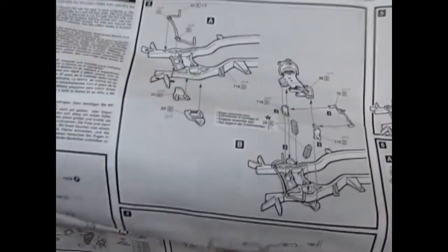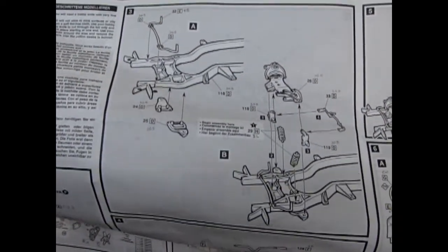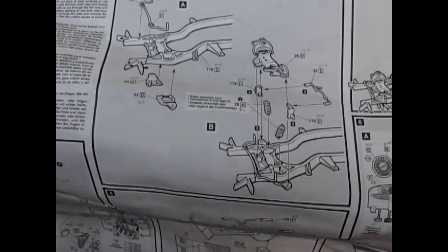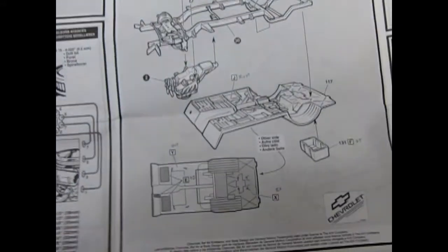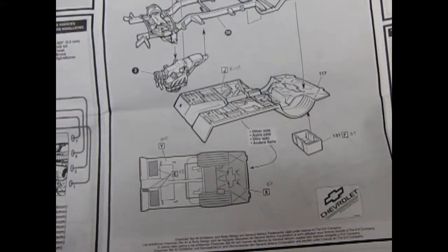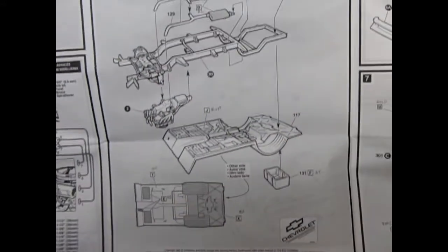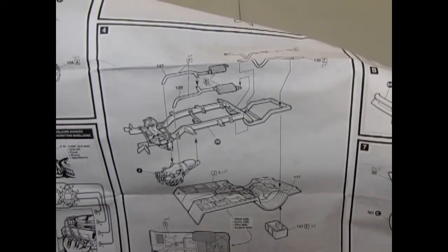They also give you a fully detailed undercarriage with suspension which you could adapt into making it into a working suspension steerable. They give you a different interior from the stock version as well as a different fuel cell and some different exhaust pipe.